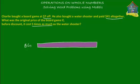Charlie got $7 off on this board game. If this entire thing is the original price of the board game — the question mark — then this part here, shaded yellow, is the discount that he got, and that is $7. So the discount given was $7 and the original price is the question mark that we have to find out.